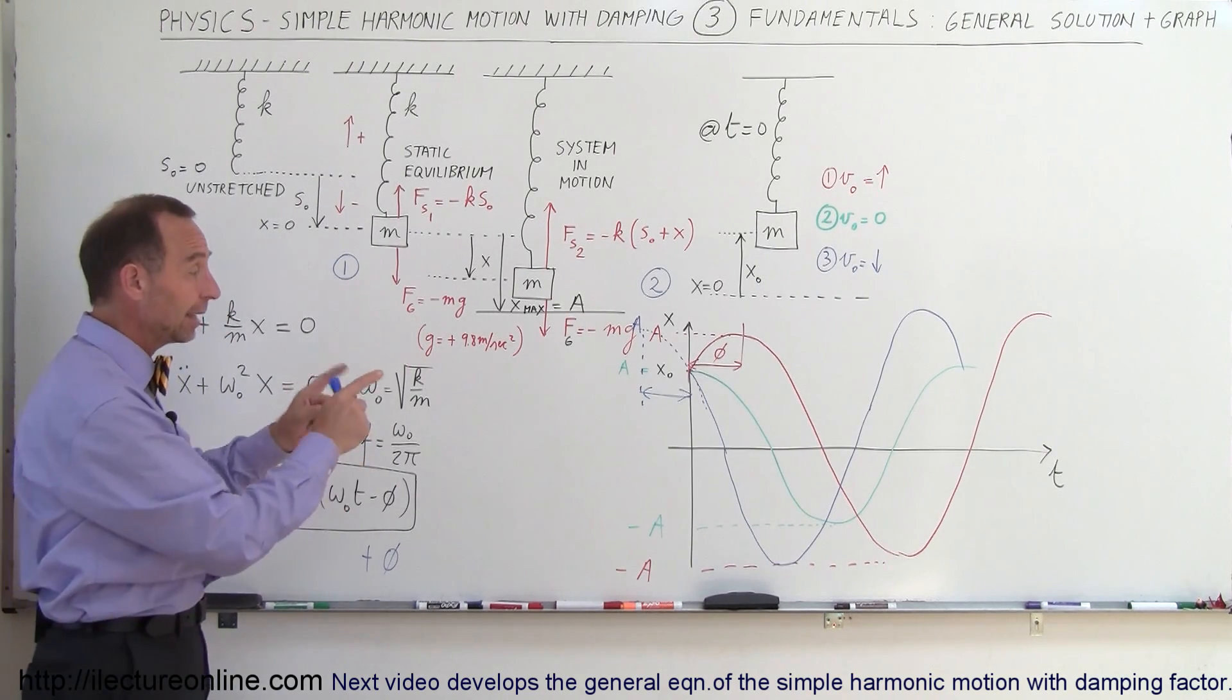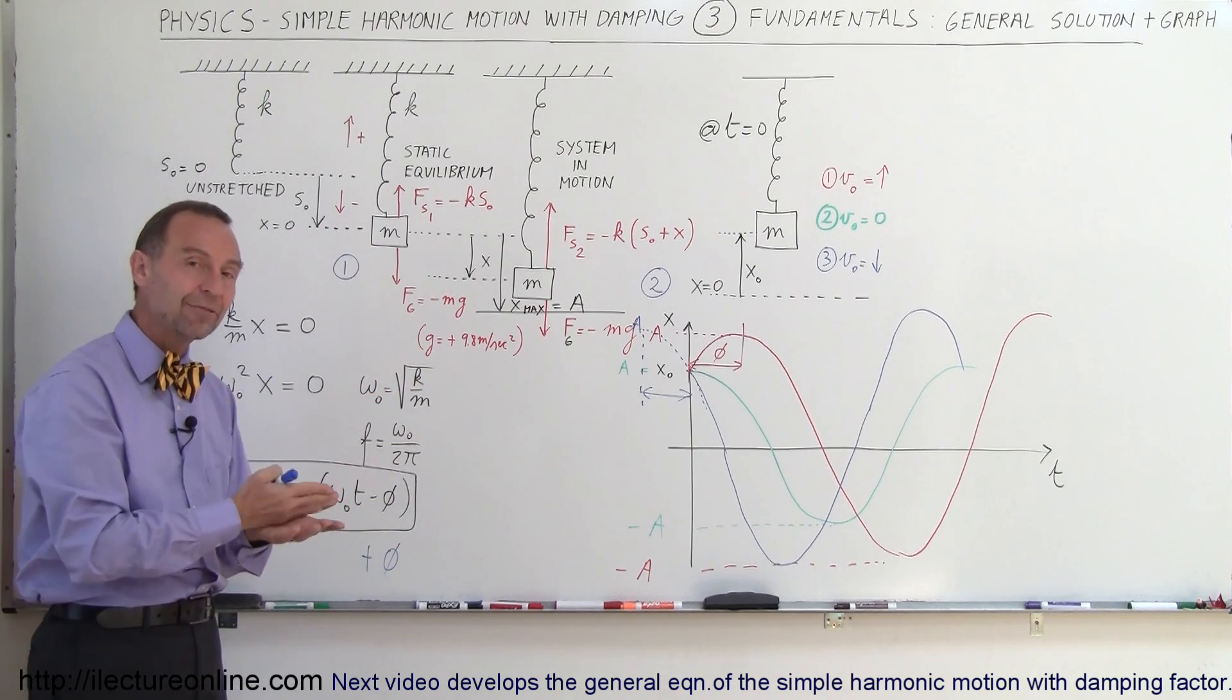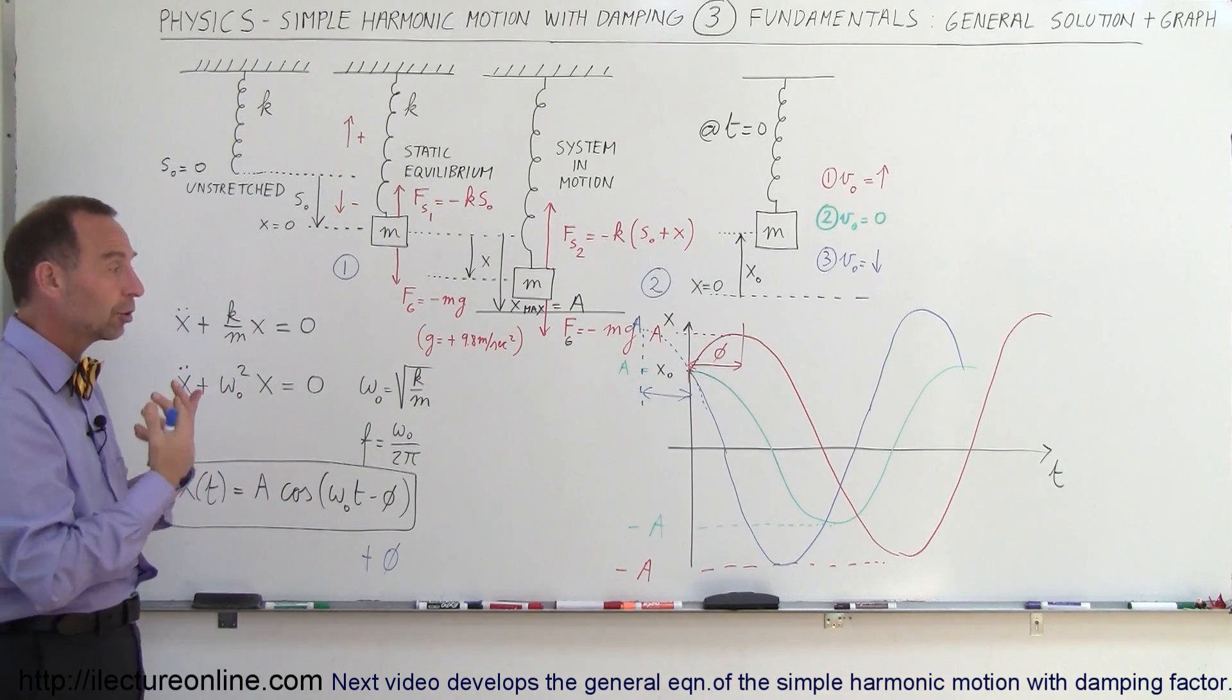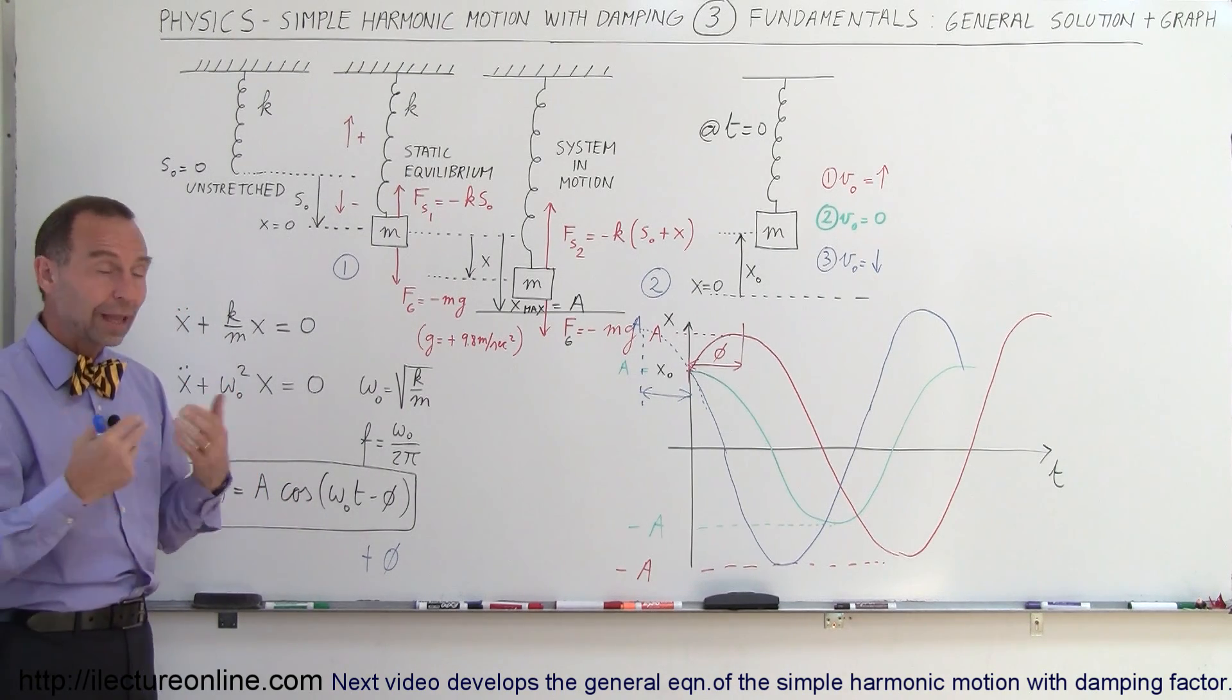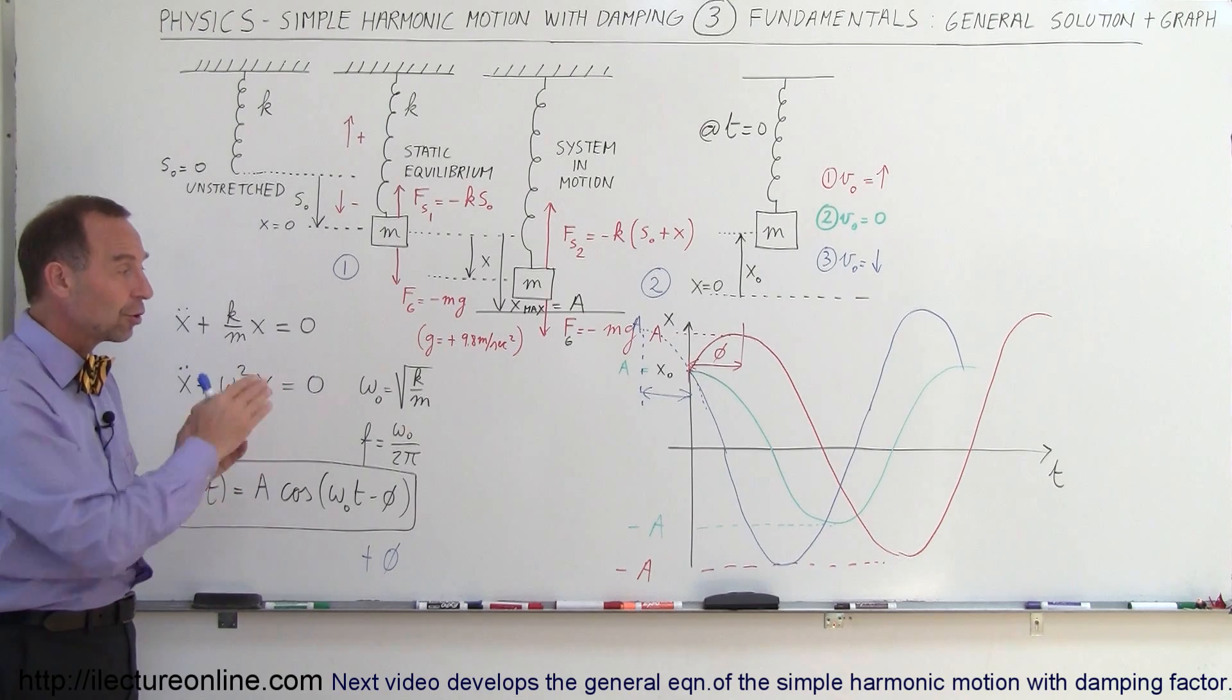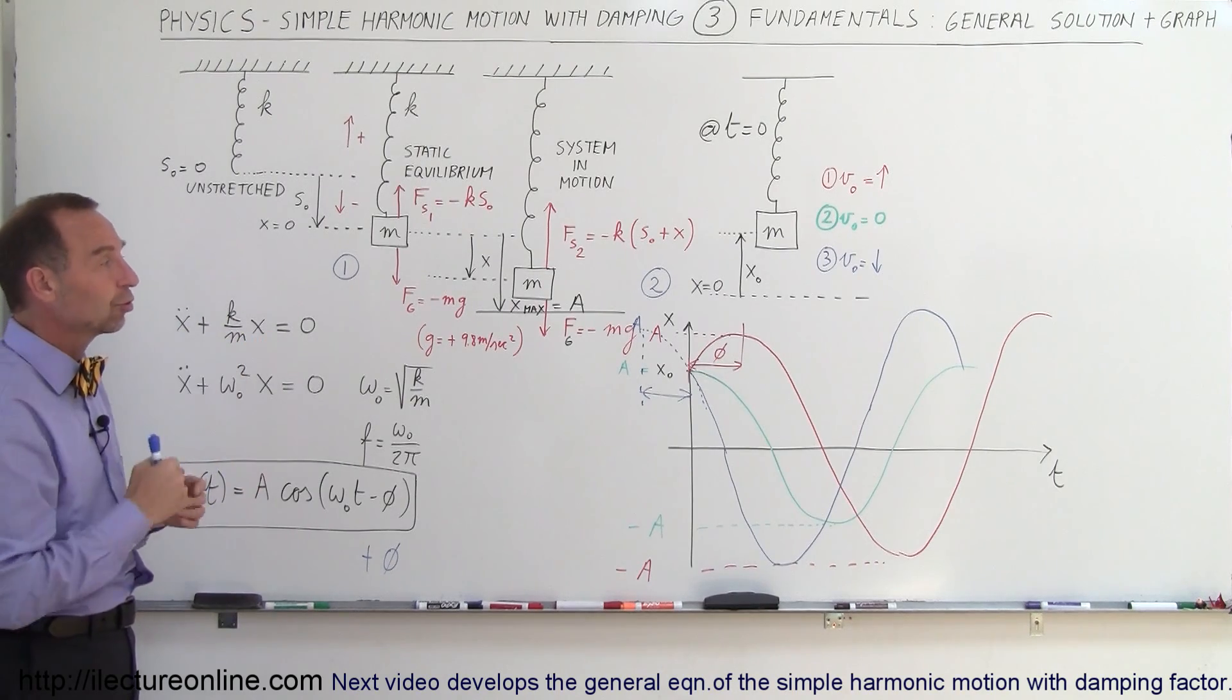You'll also see in the next so many videos how that graph will change when we put the damping factor in there as well. So now you've seen the general approach of how we look at simple harmonic motion with no damping, you then saw how the general solution was developed, and then in this video you can see how the graphical representation shows how the simple harmonic motion happens.